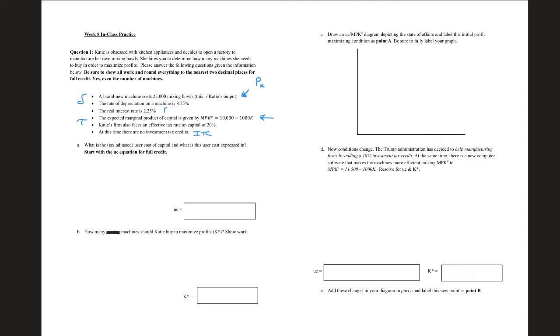Now in class, we did not go over how to design the user cost of capital equation. I have that in another video that I can make sure that I post in the comments. But just so you know, the user cost of capital is equal to r plus delta, 1 minus ITC, times PK all over 1 minus tau.